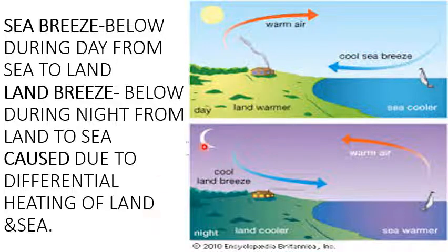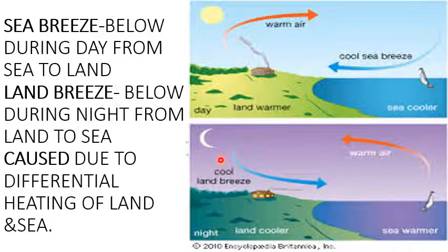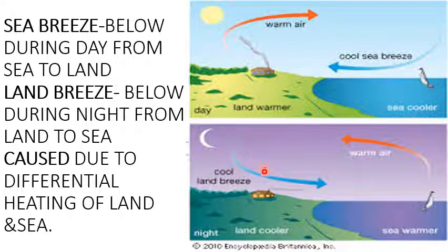During night, because land radiates heat quickly, it becomes cool — low temperature here, so pressure is high. Water is still warmer, so high temperature but pressure is low. Therefore, winds start blowing from high pressure areas towards low pressure areas. These winds, as they blow from land, are dry and cool winds and will not bring rainfall to the coastal areas.